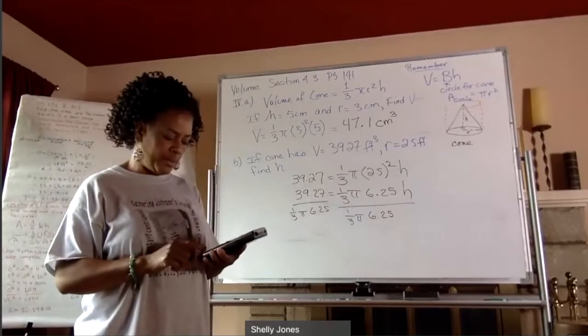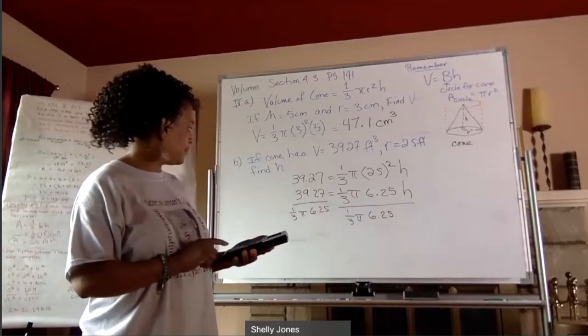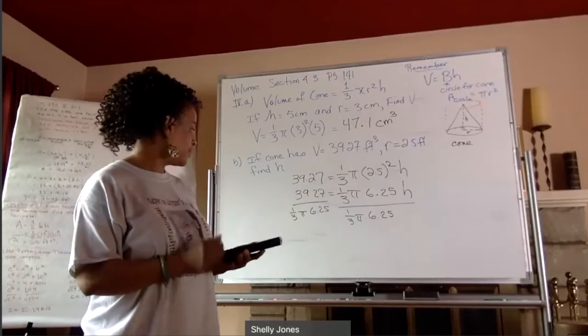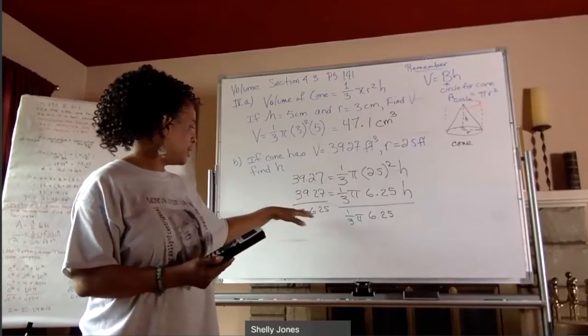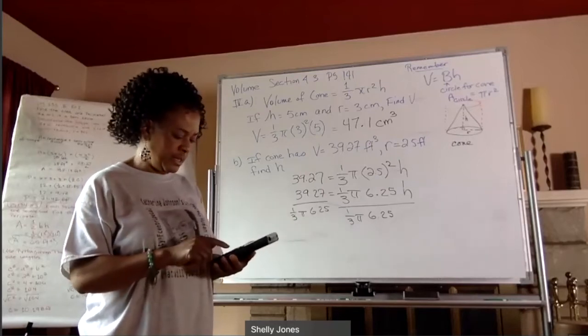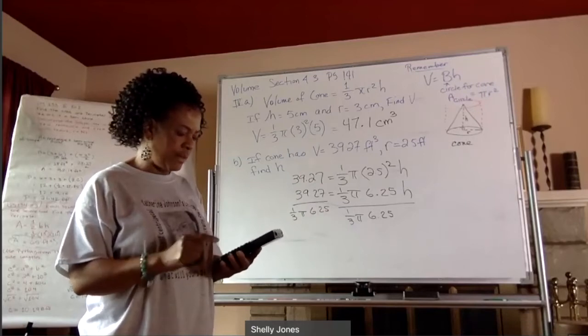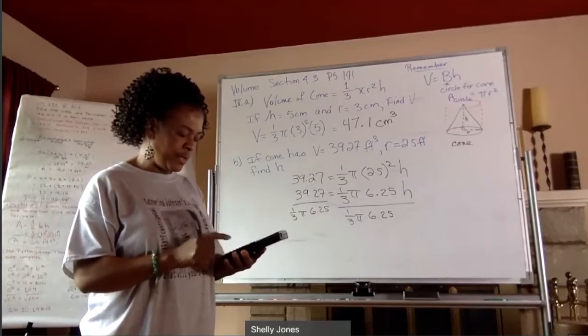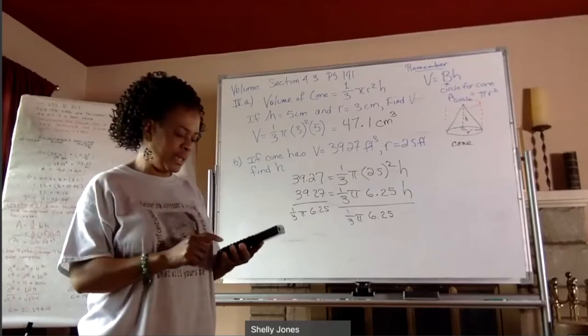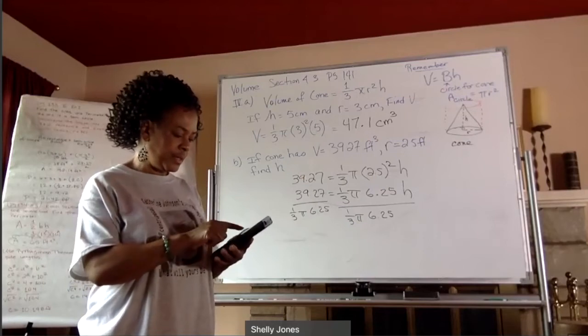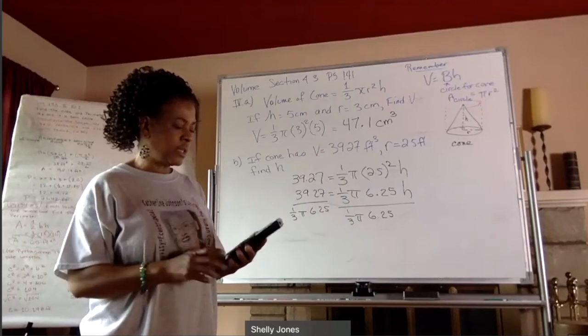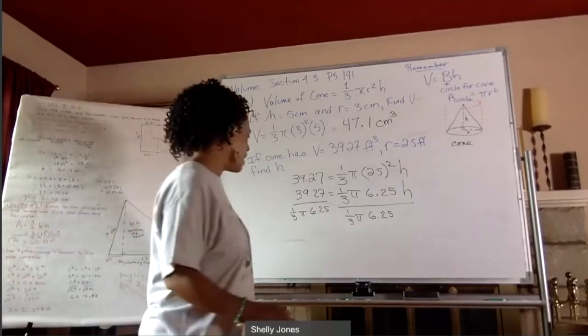So I'm going to clear that out and I'm going to do 39.27 divided by, and I'm going to say parentheses. I'm going to say 6.25 divided by three. So parentheses, and then another parentheses, 6.25 divided by three parentheses. So that's my first set of parentheses within that parentheses times pi, and then parentheses, and then equals 6.0.